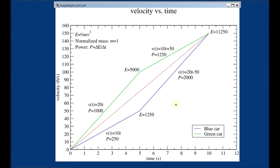So the difference between these two cars is: the blue car is a more powerful car, but the green car has more torque.